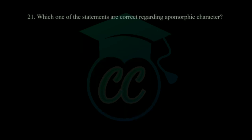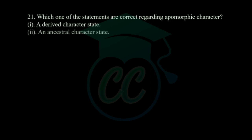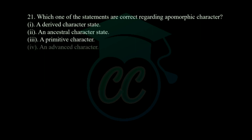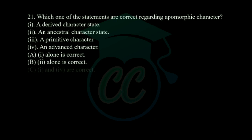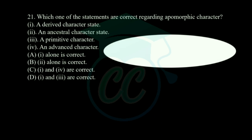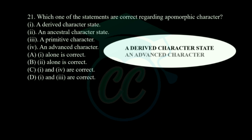Next question: which statements are correct regarding apomorphic character? Statement 1: it is a derived character state. Statement 2: it is an ancestral character state. Statement 3: it is a primitive character state. Statement 4: it is an advanced character state. Options given: one alone correct, two alone correct, one and four correct, one and three correct. The correct statements are one and four — it is a derived character and an advanced character — so option C is correct.